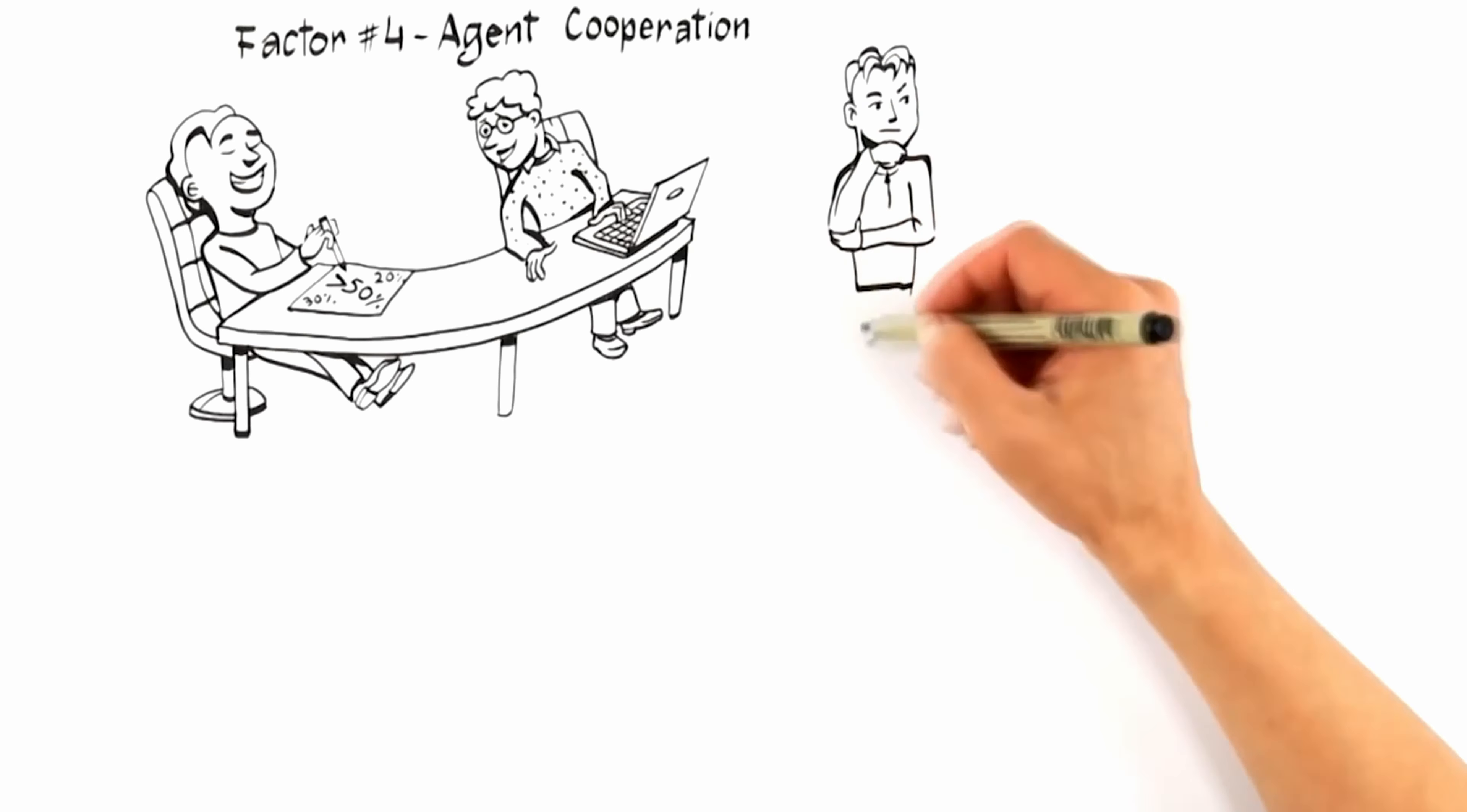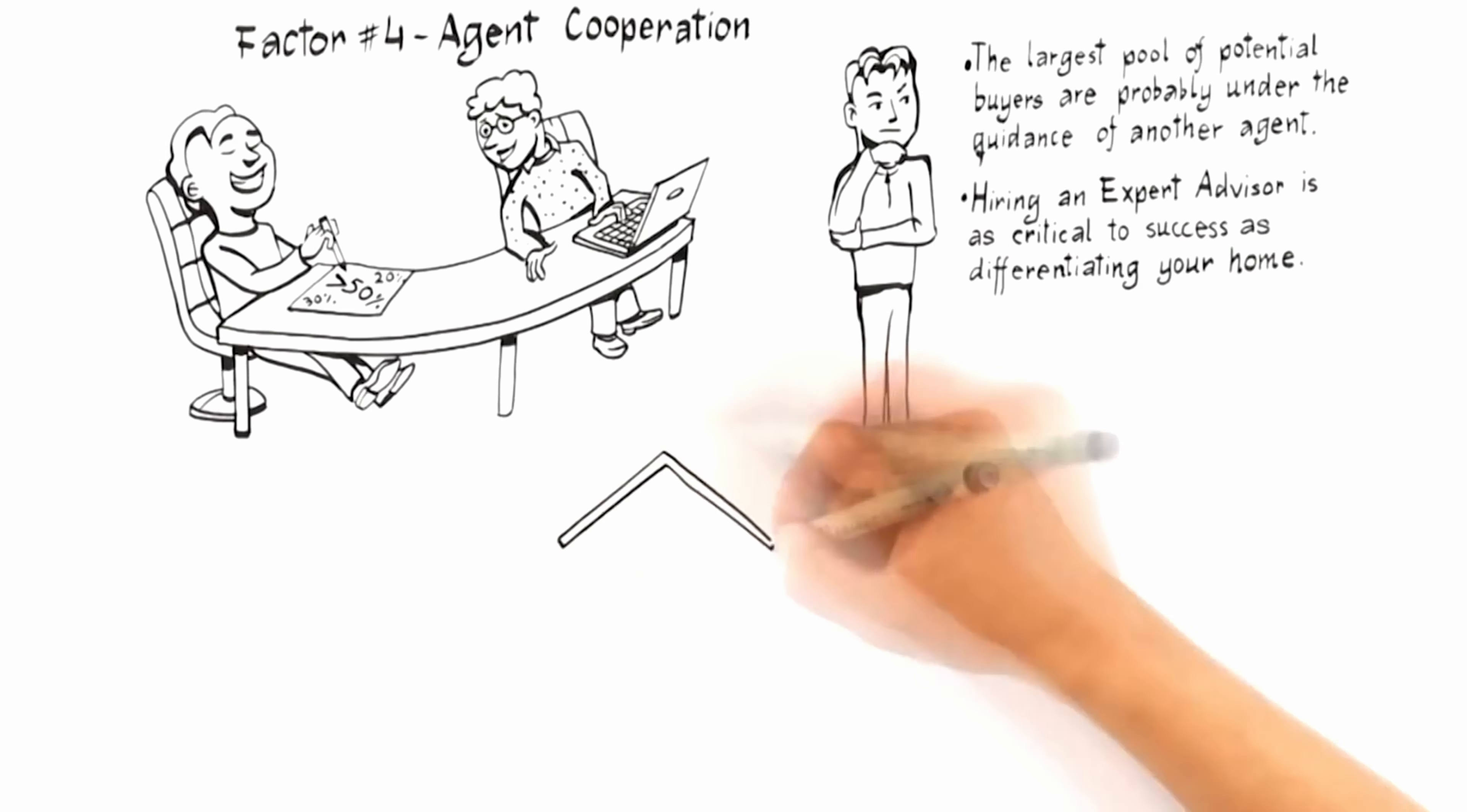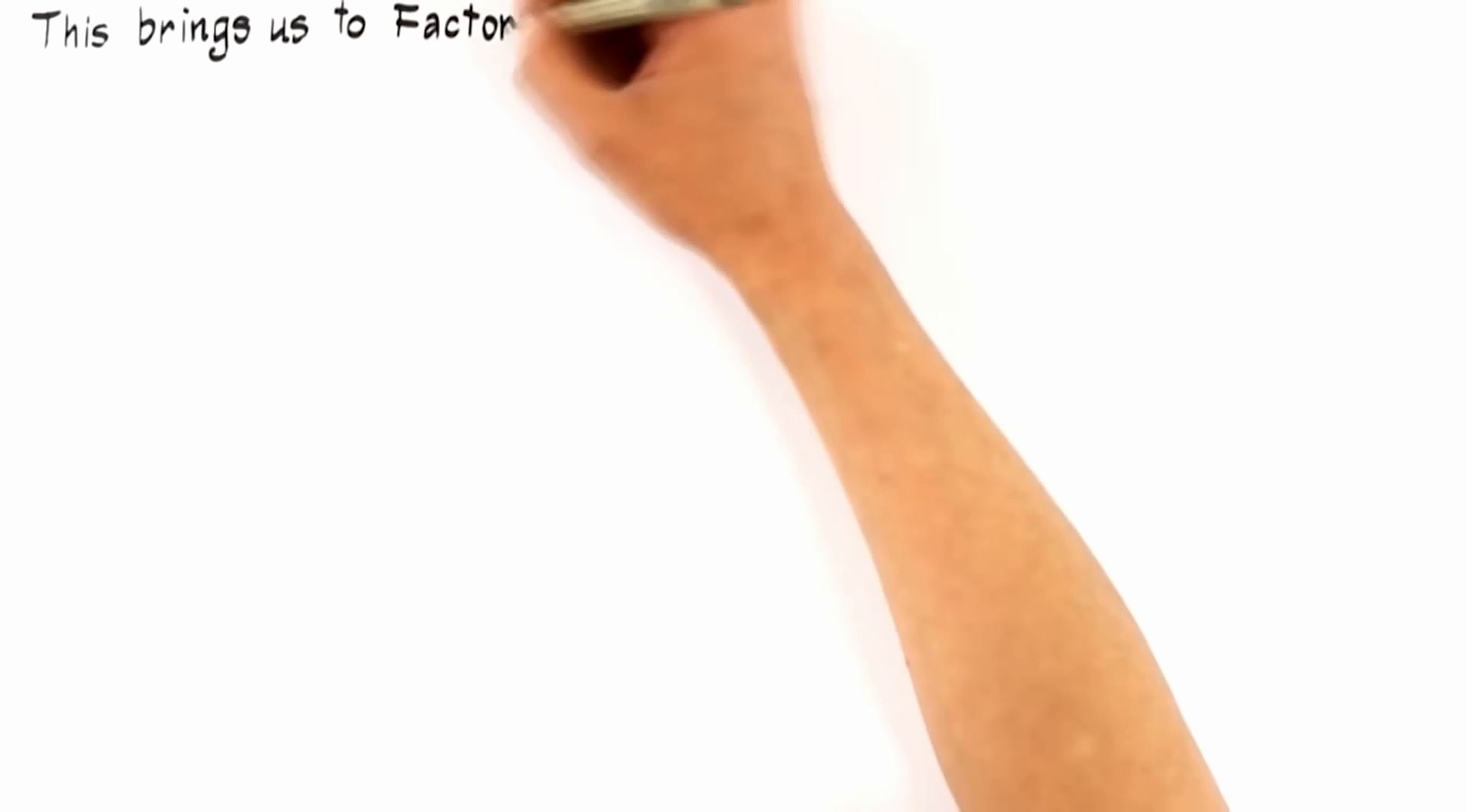Since the largest pool of potential buyers are probably under the guidance of another agent, it's critical that your expert advisor allocate a portion of their marketing budget to get your home in front of the top agents in the market who represent buyers. This means hiring an expert advisor who understands the current incentives that motivate other agents to bring their best clients is as critical to success as differentiating your home is to attract targeted buyers. Be wary of the agent that offers to accept lower commission. Often this leads to a lower compensation being offered to the agents that potentially have a buyer for your home, resulting in little to no activity on your house.